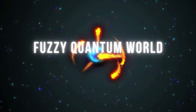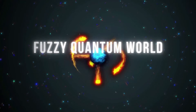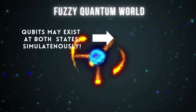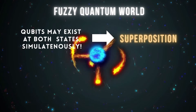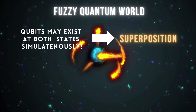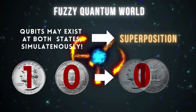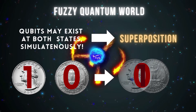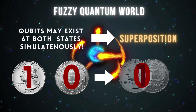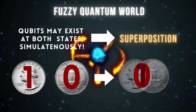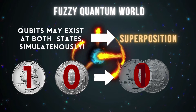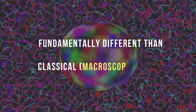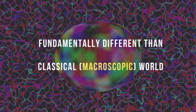Unlike classical bits, which can only represent a 0 or a 1, qubits can represent both a 0 and a 1 simultaneously. This property, known as superposition, allows quantum computers to perform certain calculations much faster than classical computers.